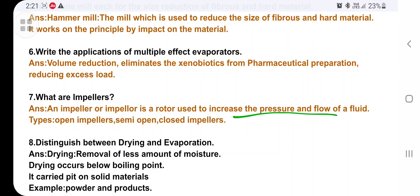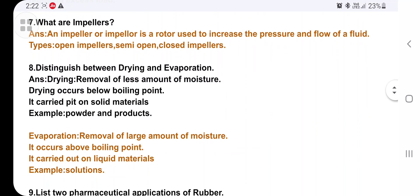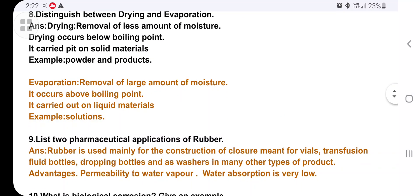Distinguish between drying and evaporation. Drying: removal of less amount of moisture, occurs below melting point, carried on solid materials, example is powder and products. Evaporation: removal of large amount of moisture, occurs above boiling point, carried out on liquid materials, examples are solutions and their products.